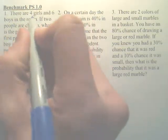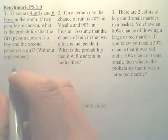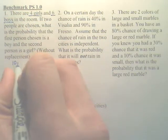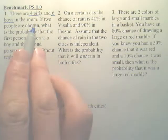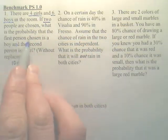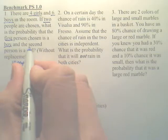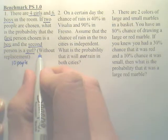There are four girls and six boys in a room. So how many people? Ten people. Okay. If two are chosen, what is the probability that the first is a boy and the second is a girl without replacement?